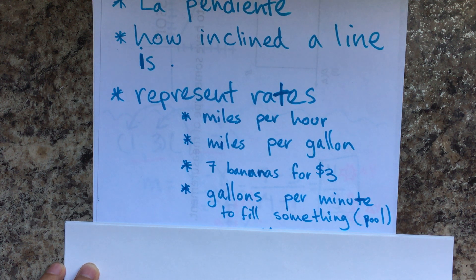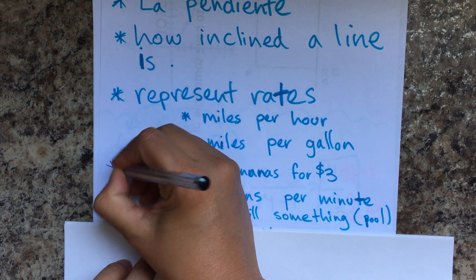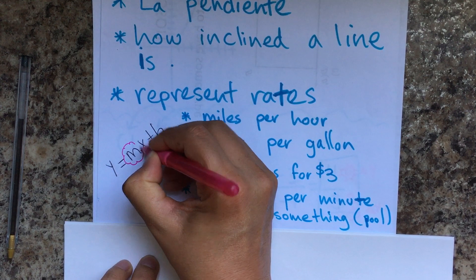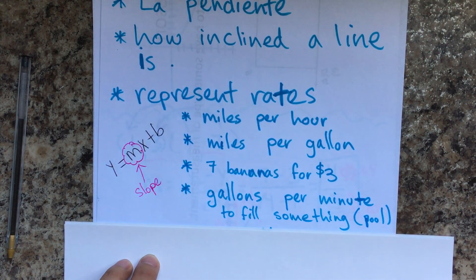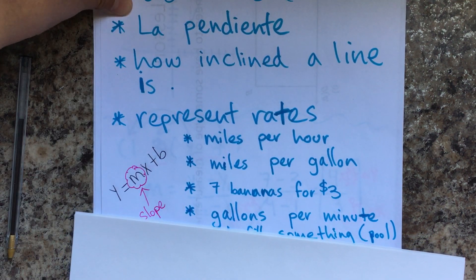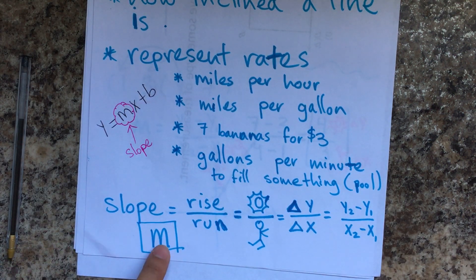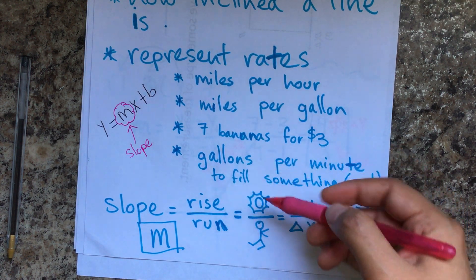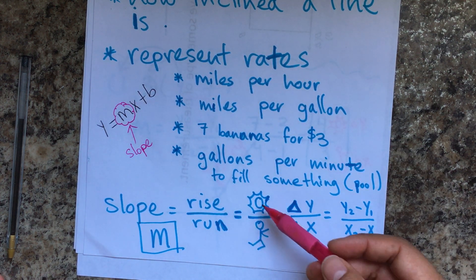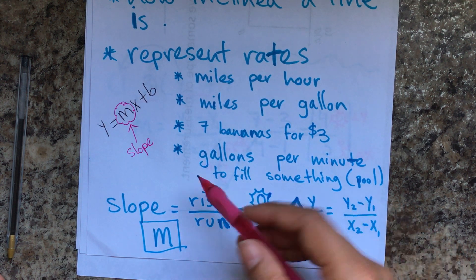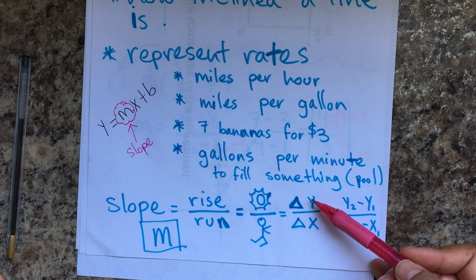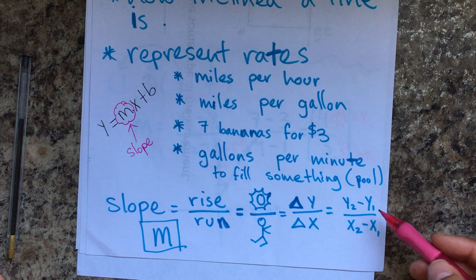The slope is always next to x when we have y equals mx plus b. So we have y = mx + b — this part right here is the slope. It's represented by M and also known as rise over run. I like to think of rise as the sunrise: if it's positive, the sun goes up, meaning you move up; if it's negative, the sun goes down. The run means you go left or right.